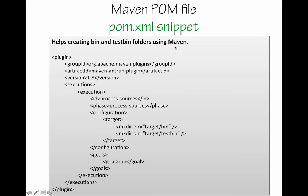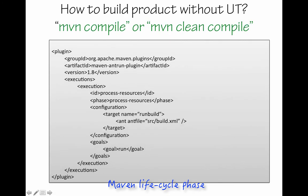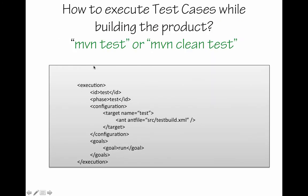This pom snippet is responsible for creating the target bin and target test bin folders, and it gets executed in the process-sources lifecycle phase of Maven. When you issue maven compile or maven clean compile, this section will invoke the build.xml file. And when you issue maven test or maven clean test, this section will invoke the test build.xml file.